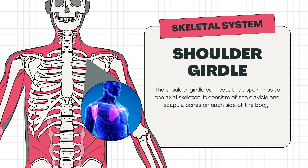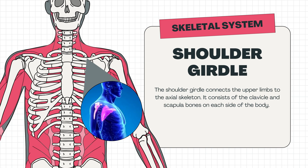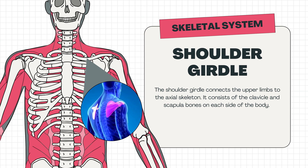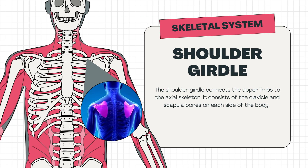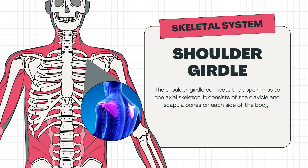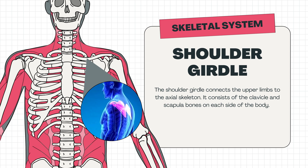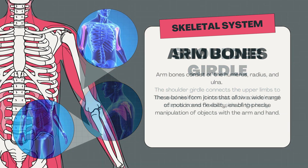The shoulder girdle connects the upper limbs to the axial skeleton. It consists of the clavicle and scapula bones on each side of the body. The arm bones consist of the humerus, radius, and ulna.